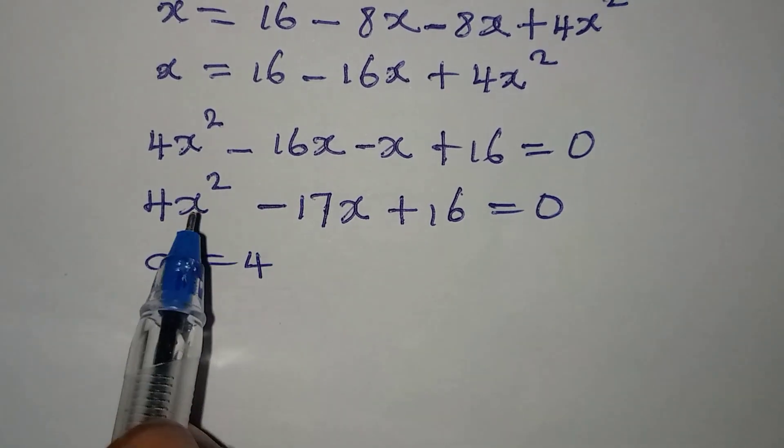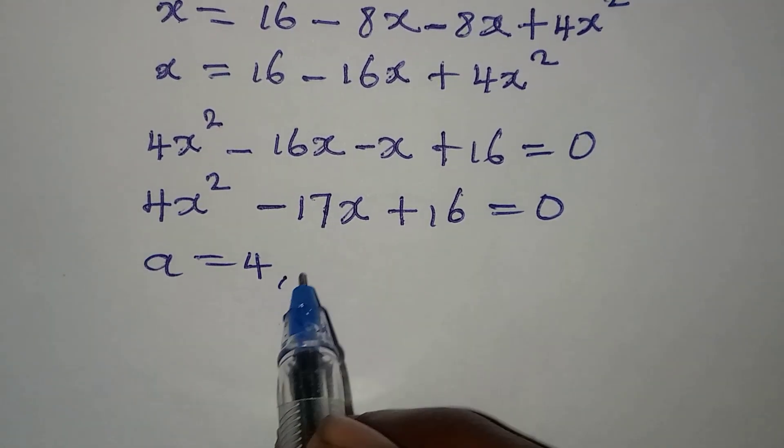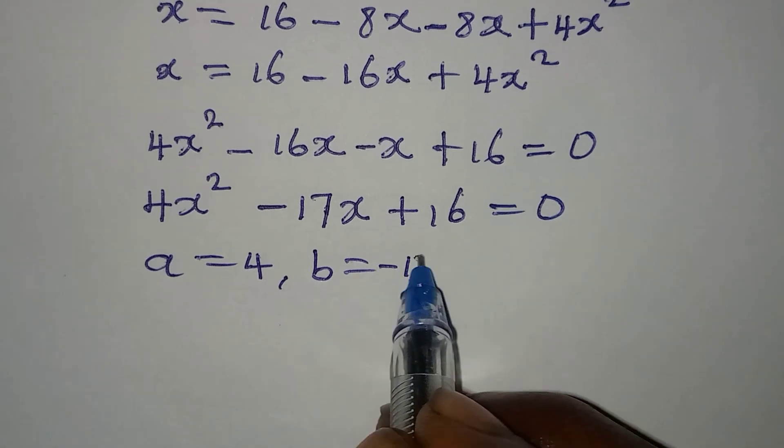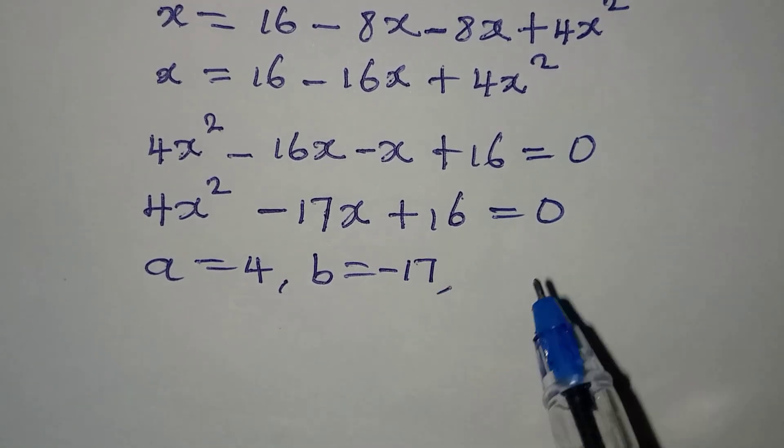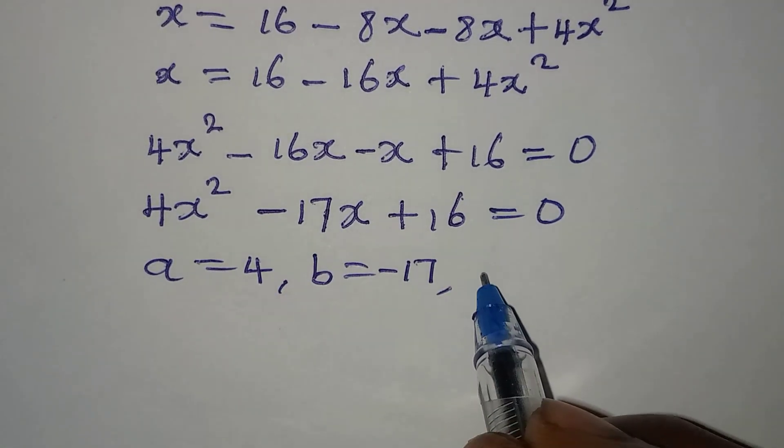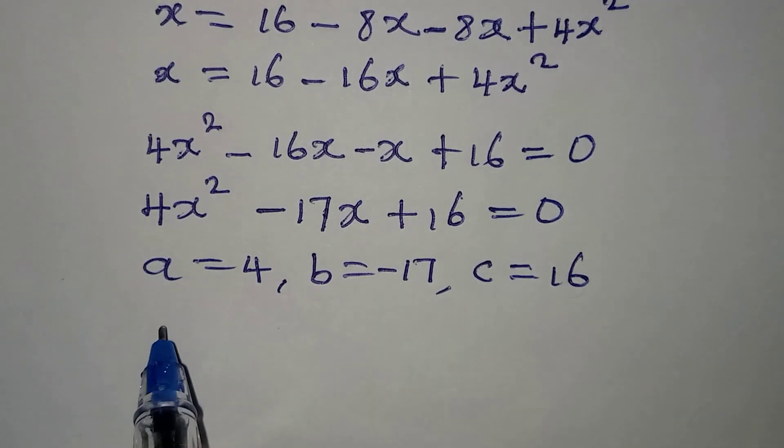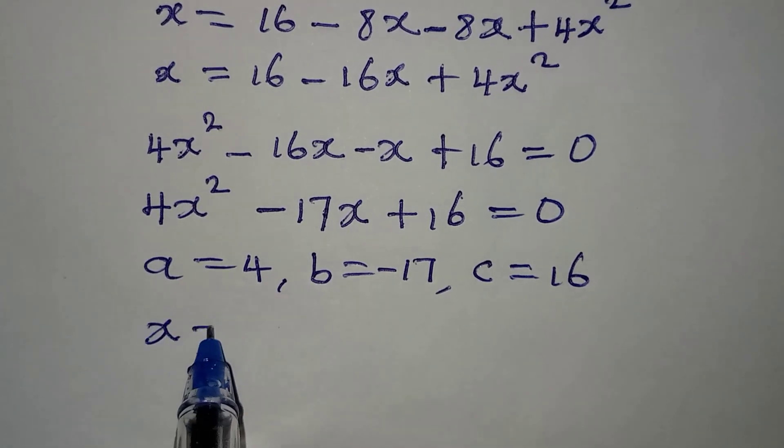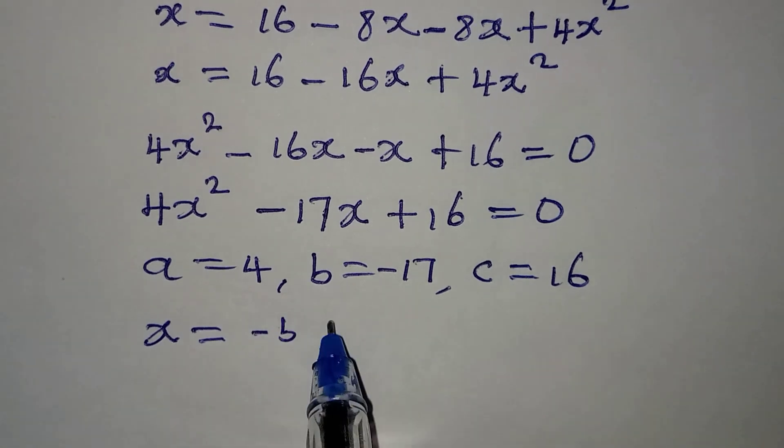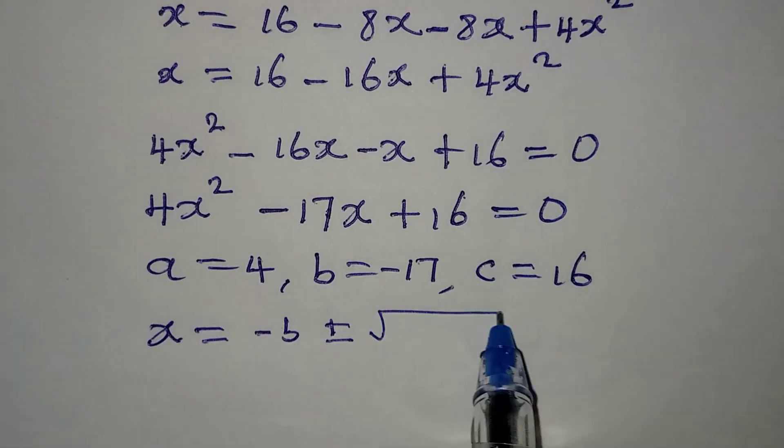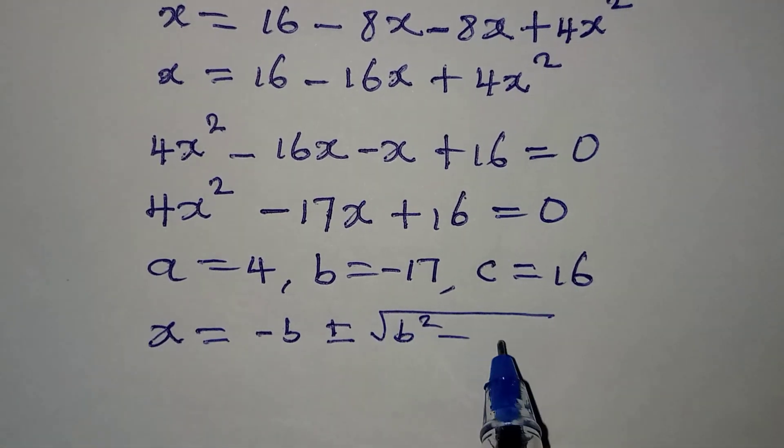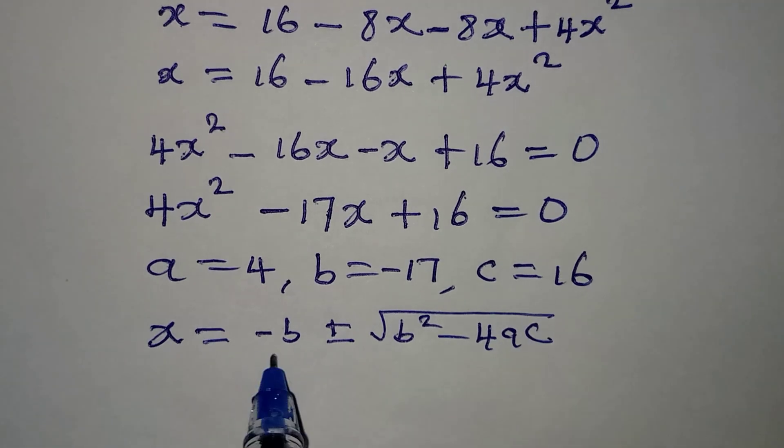a is 4, the coefficient of x². b is -17, the coefficient of x, and our constant c equals 16. The formula is x = (-b ± √(b² - 4ac)) / 2a.